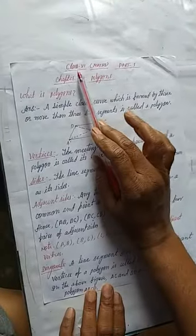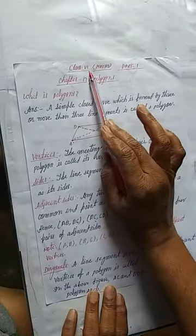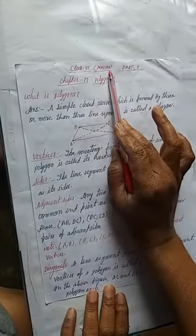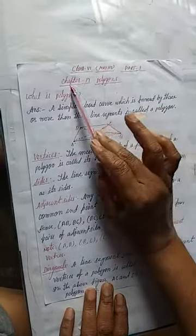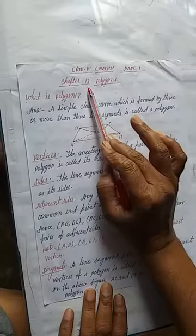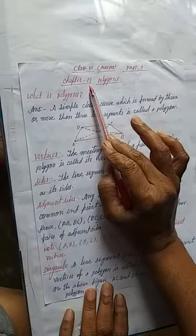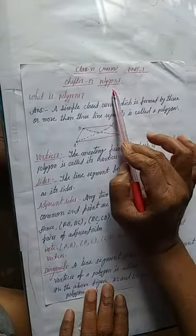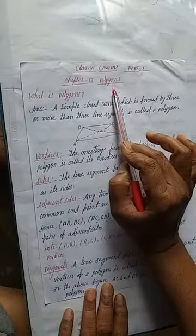Hello students. Class 6 Maths, Chapter 13. The name of the chapter is Polygons.